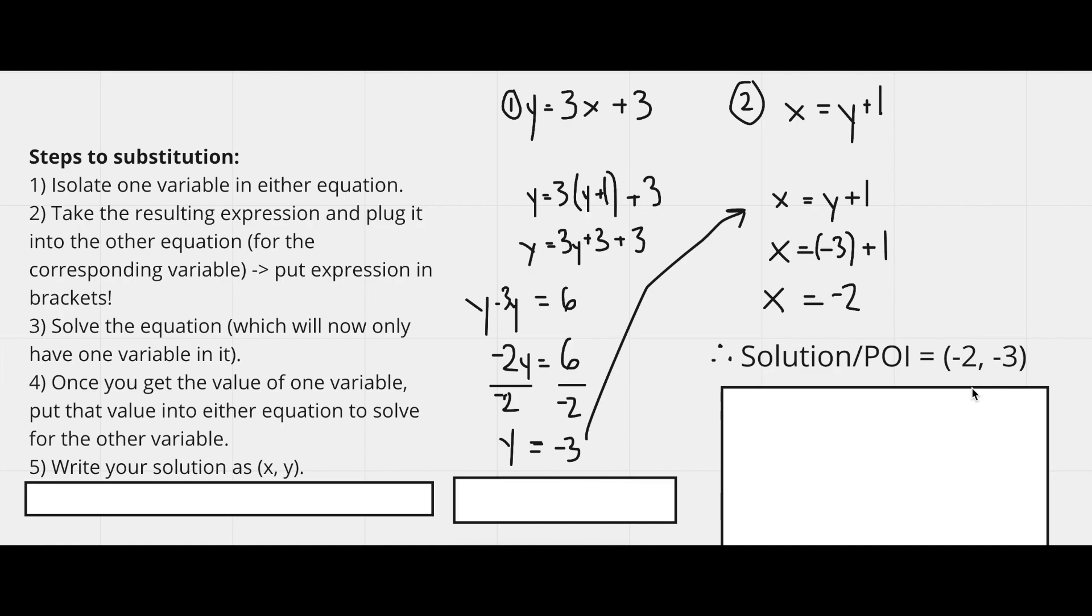There's only one point on the whole grid that these two lines will meet. And this is that point, negative 2 comma negative 3.